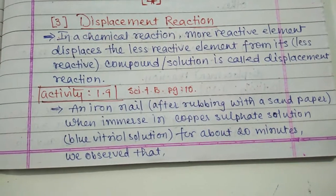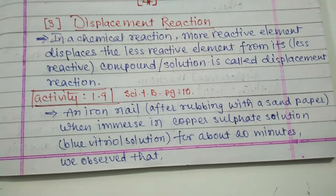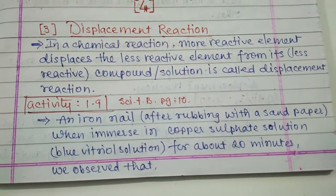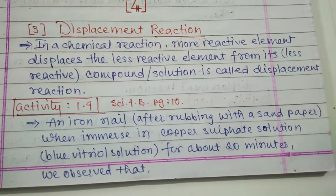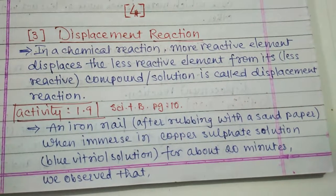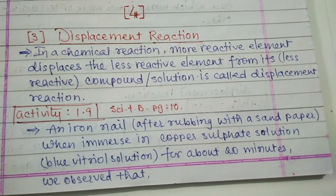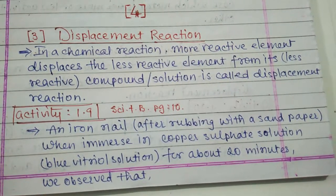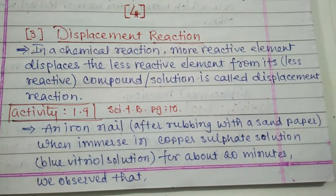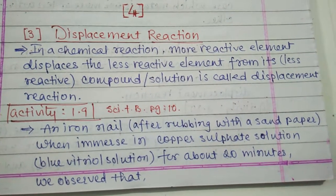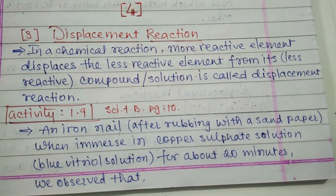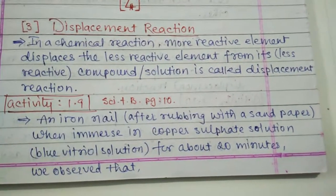As per Activity 1.9 of page number 10 of the science textbook, an iron nail after rubbing with sandpaper is immersed in copper sulfate solution. Copper sulfate solution is also called blue vitriol solution. The formula of copper sulfate is CuSO4 and the color of the solution is light blue. We observe this reaction for about 20 minutes.